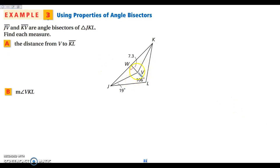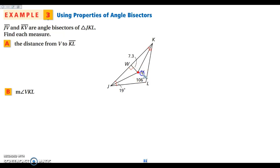In example three, I want to find the distance from V to KL, given that JV and KV are angle bisectors. Since V is the incenter — where the angle bisectors meet — the distance from V to each side of the triangle is exactly the same. So the distance from V to each side, including KL, is 7.3.